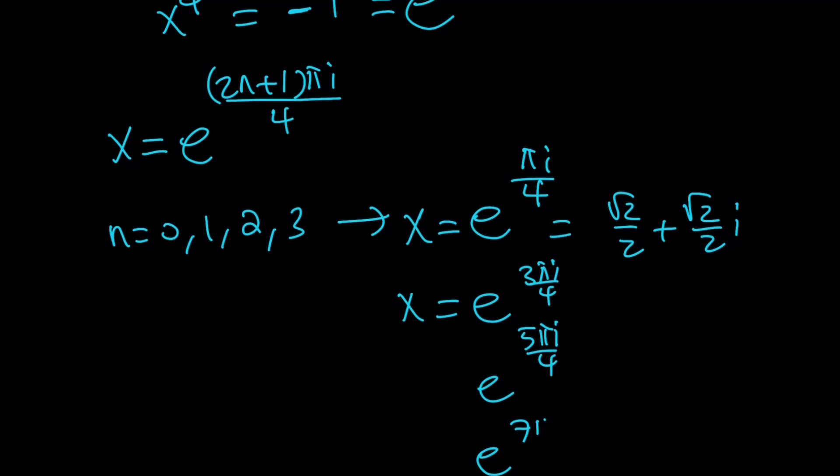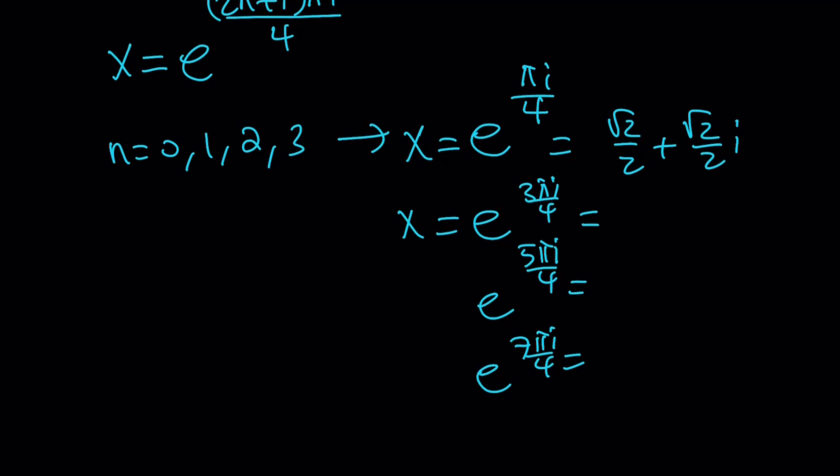And then e^(7πi/4). If you write all of these solutions, they're going to look like each other, except for the sign changes. The second one is going to be -√2/2 + √2/2 i. The third one is going to be -√2/2 - √2/2 i.